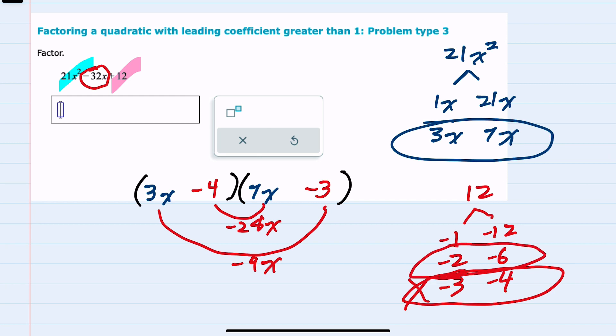the negative 2 and the negative 6. This gives me a negative 14x and a negative 18x. And when you combine those, this does give me the negative 32x. So this is the combination that works. We have factored here by trial and error.